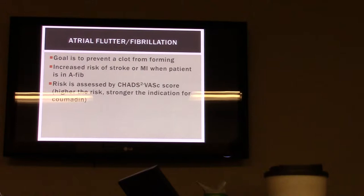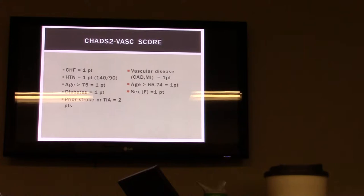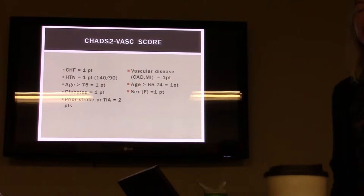To talk about AFib or AFlutter, our goal is to prevent a clot from forming. If you have AFib, you have an increased risk of stroke or MI. This risk is assessed by something called the CHADS2-VASc score, where the higher the score, the higher the indication for warfarin. Some of the factors that go into this score are patient comorbidities and factors such as age and gender.